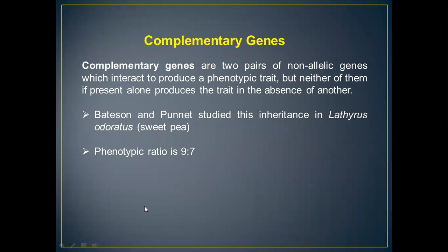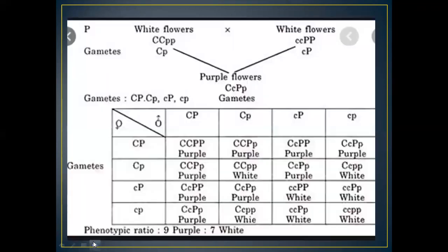In today's lecture, I shall be covering complementary genes. There are two pairs of non-allelic genes which interact to produce a phenotypic trait, but neither of them, if present alone, produces the trait in the absence of the other. Bateson and Punnett studied this inheritance in Lathyrus odoratus, which we call sweet pea, and they obtained the phenotypic ratio of 9:7.